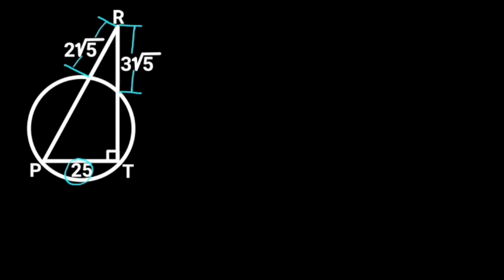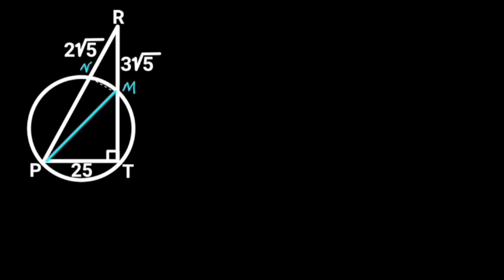Find the area of triangle TRP. To solve this problem, first let's label this point M and this point N. Next, let's draw a straight line to join P and M, and another straight line to join M and N.